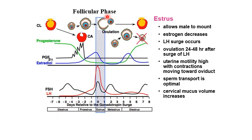Estrus is also under the follicular phase — it is the time when the female will allow the male to mount it. During this time, estrogen decreases and LH surges in preparation for ovulation. Ovulation occurs 24 to 48 hours after the LH surge. There is also high uterine motility with contractions moving toward the oviduct, which is important for sperm transport, and an increase in the volume of cervical mucus excreted by the animal.